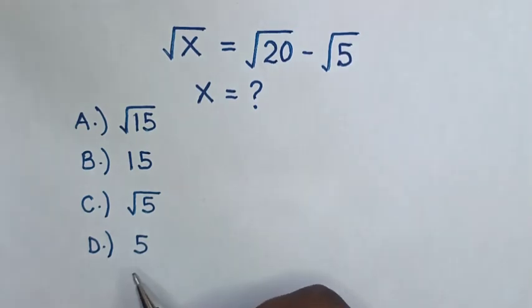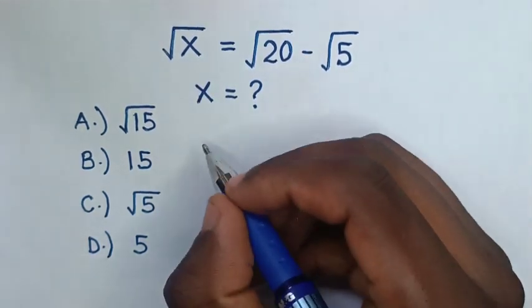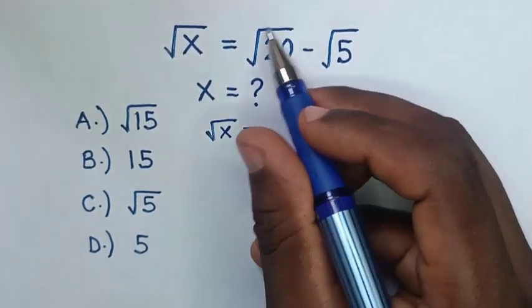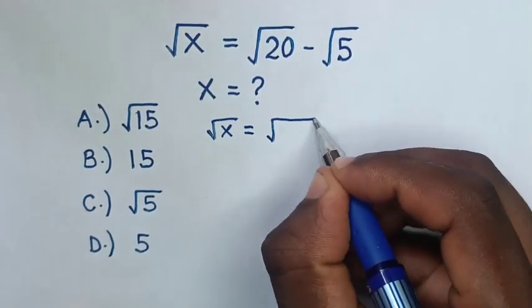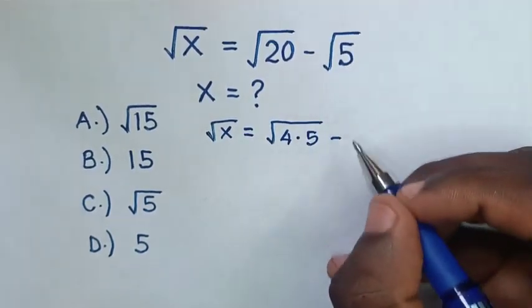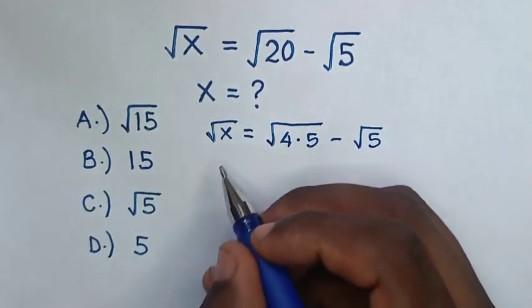From this equation, square root of x equals square root of 20, which is the same as square root of 4 times 5, minus square root of 5.